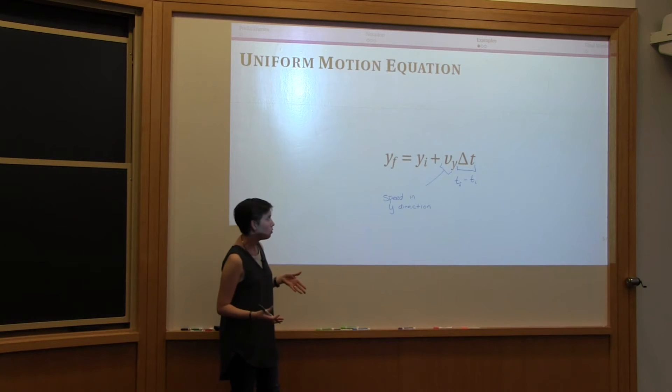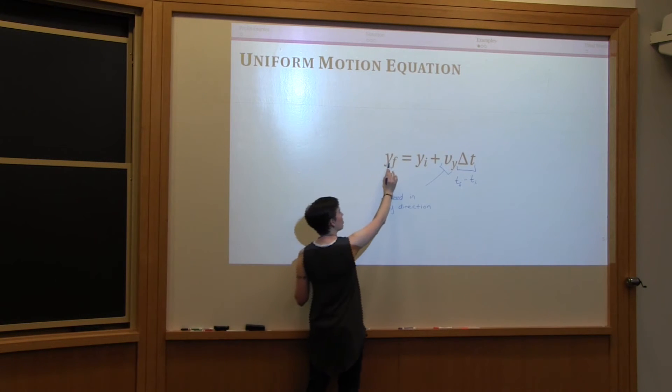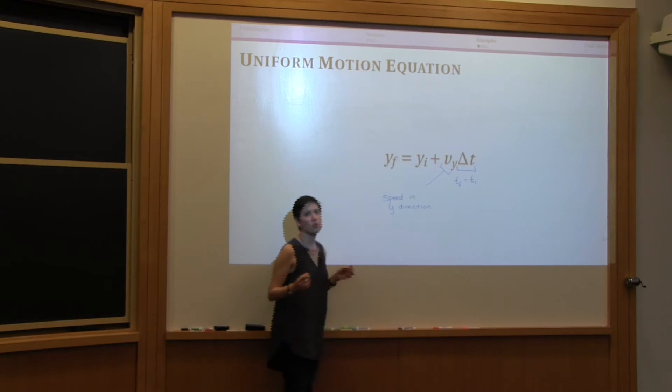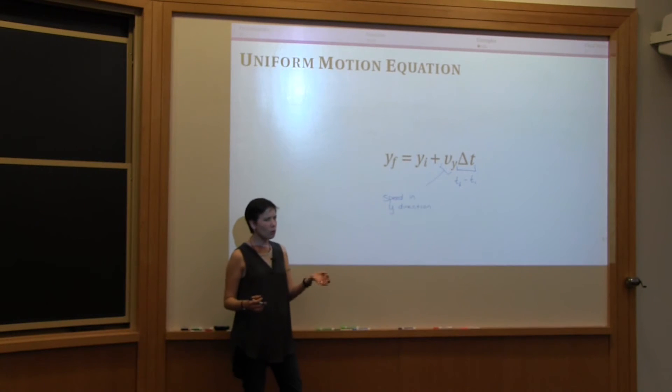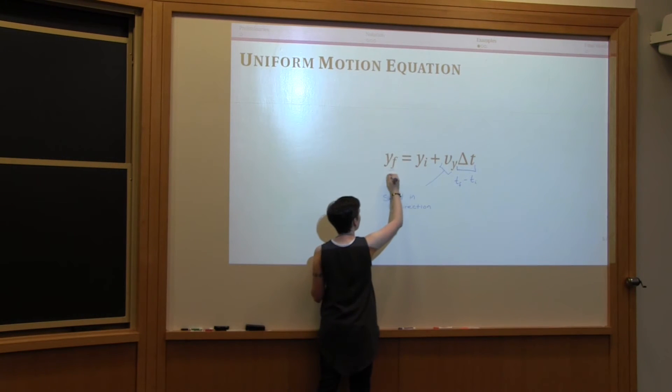Now the next thing you note is that we have two values of y here, but they have different subscripts. This problem wouldn't make sense if you actually had the same subscripts or no subscripts at all. But here we have f for final.